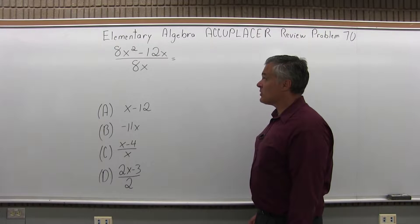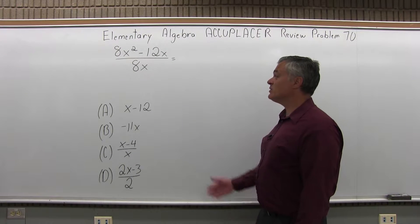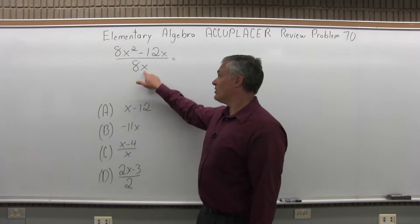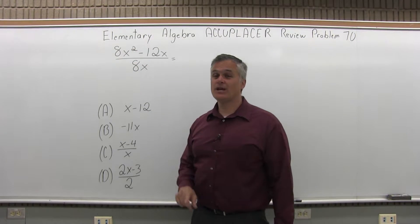We have 8x squared minus 12x over 8x equals which of the following four options? It's tempting to just cancel the 8x terms, but you can't do that.